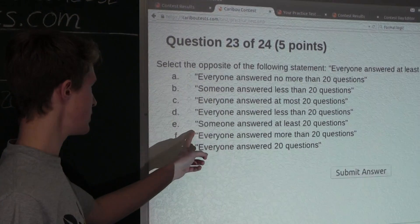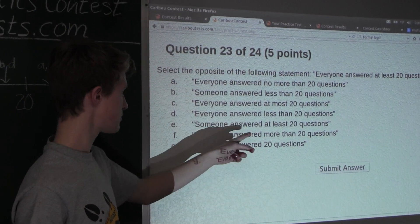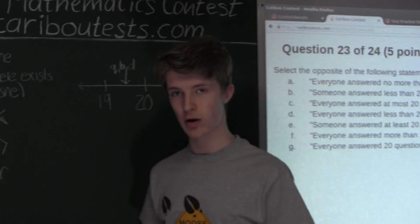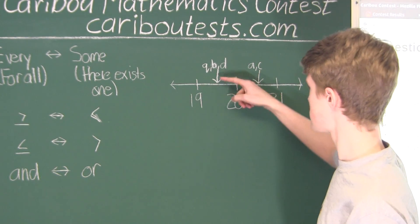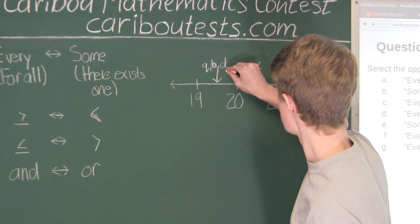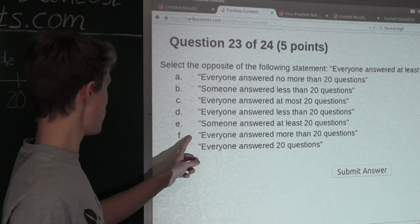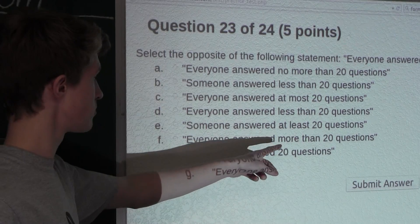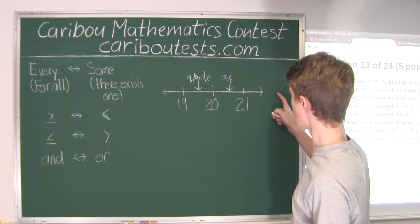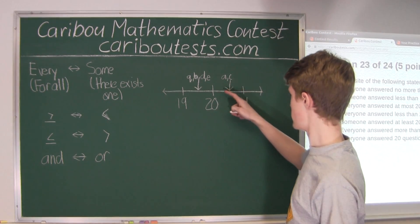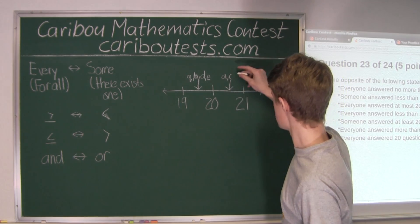Now option E: 'Someone answered at least 20 questions.' This option distinguishes between 20 or more and also 19 or less — so that is also right here in this range. And now option F: 'Everyone answered more than 20 questions.' More than 20 would be 21 or more, and also borders on 20 or less — so that is in this range.